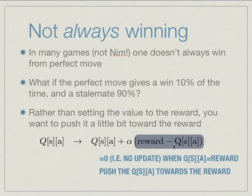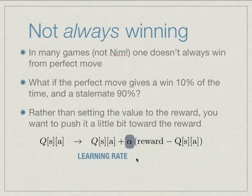And so essentially, if this part of it is zero, that means that we have perfectly estimated the reward. And so we wouldn't need to update. So if we had a perfect estimate of the reward, then we would not need to update. Otherwise, we're just going to push it a little bit in that direction. And so the learning rate itself is going to be some small number.